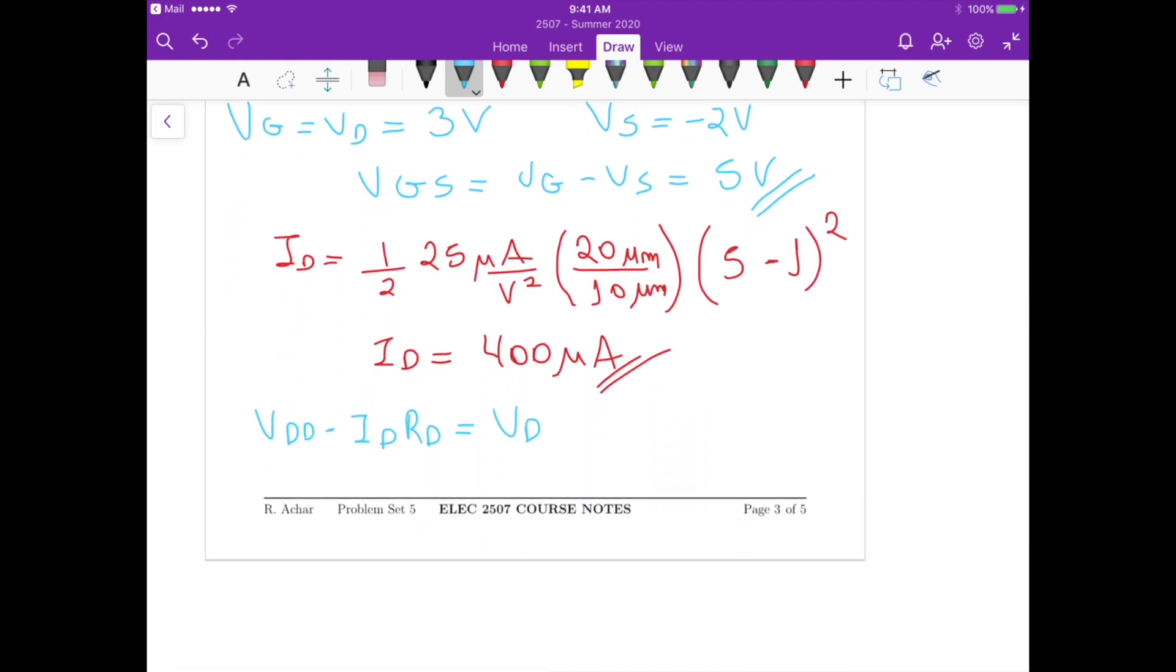So that's the equation that we have. Now if we isolate RD in this equation, then we get RD equals to VDD minus VD, divided by ID, and this is the same as 8 volts minus VD, which in our case it should be 3 volts.